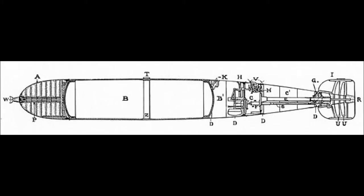In the middle section, around section B, the torpedo has a compressed air chamber that powers the torpedo.